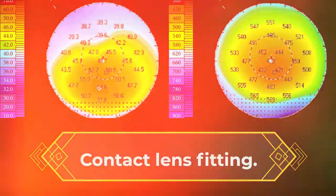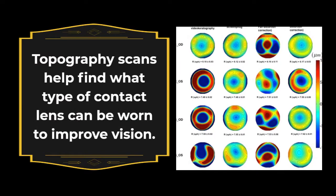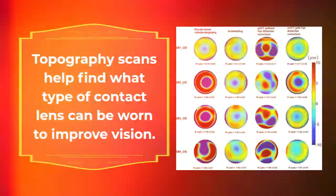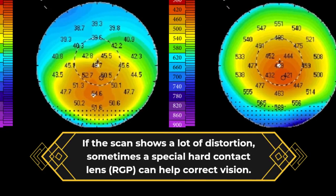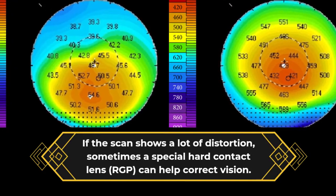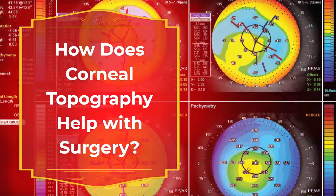Contact lens fitting. Topography scans help find what type of contact lens can improve vision. If the scan shows a lot of distortion, sometimes a special hard contact lens can help correct vision. How does corneal topography help with surgery?